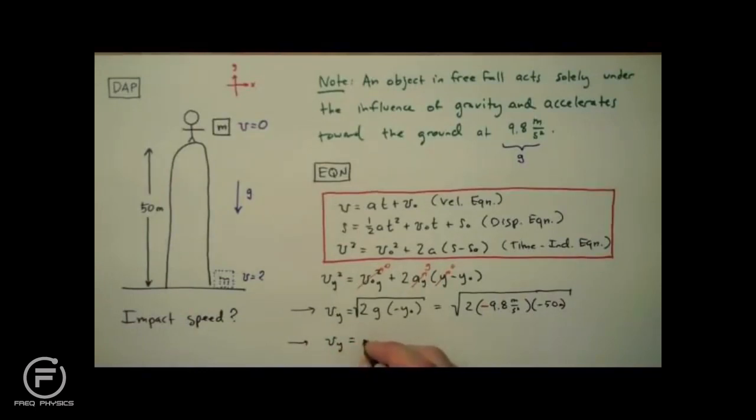So we have vy is equal to 31.3 meters per second. So there we have it. Using kinematic equations to determine the impact speed of a dropped object. I'm Jesse Mason and I hope you found this helpful. And until next time, happy learning.